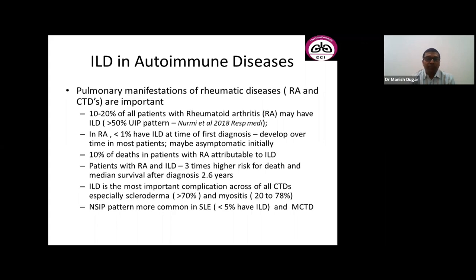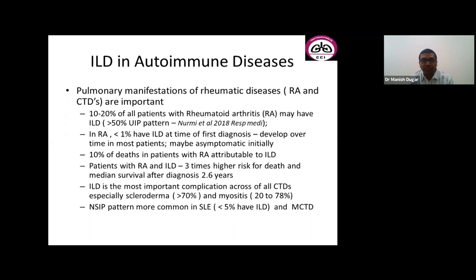Pulmonary manifestations of rheumatic diseases — especially rheumatoid or scleroderma — are many, but I will focus only on ILD. Approximately up to 20% of patients with rheumatoid arthritis may develop ILD during their lifespan, and most often it is UIP pattern, associated with more severe lung disease. ILD contributes to reduced survival in rheumatoid patients. In CTD like scleroderma or myositis, ILD is more common, reaching 70–80% of patients, and may be the initial presentation. In lupus and mixed connective tissue disorder, ILD manifestations are rare — less than 5% — with more serositis or PAH occurring.